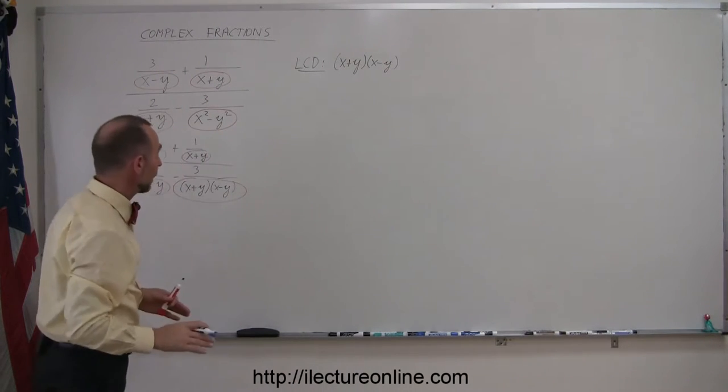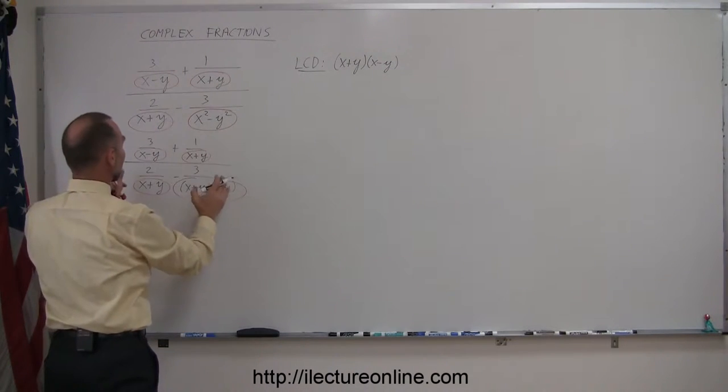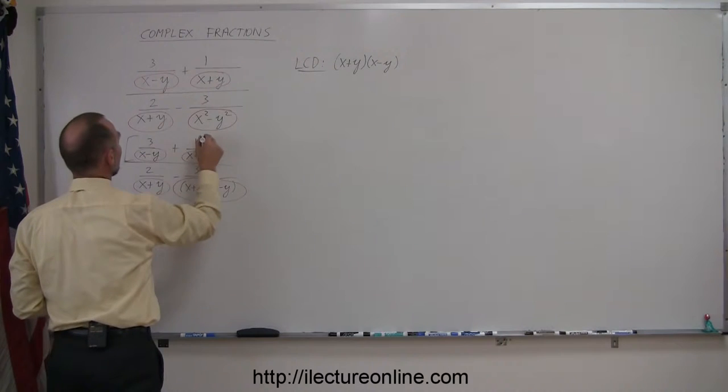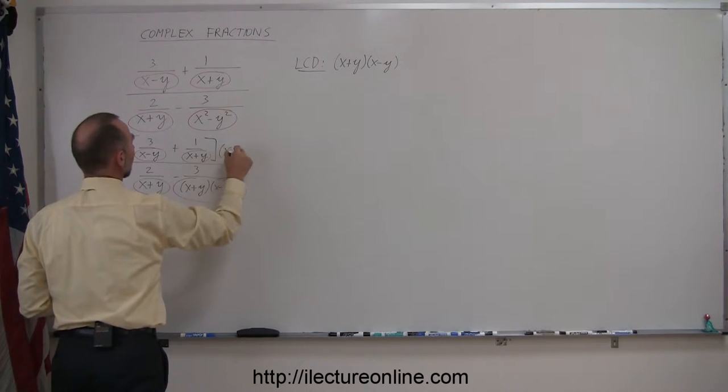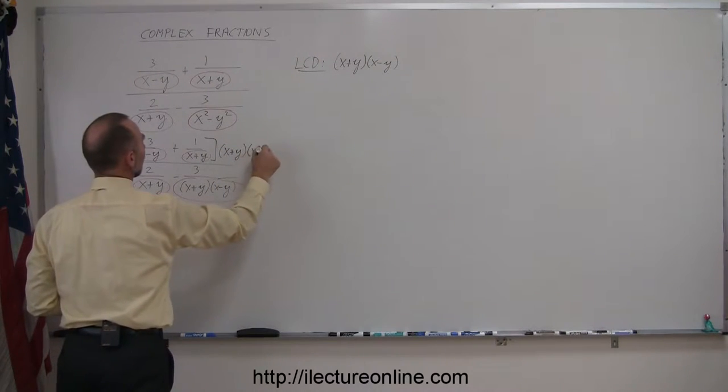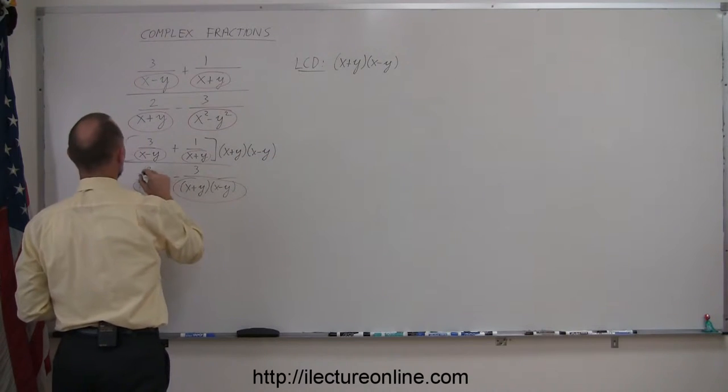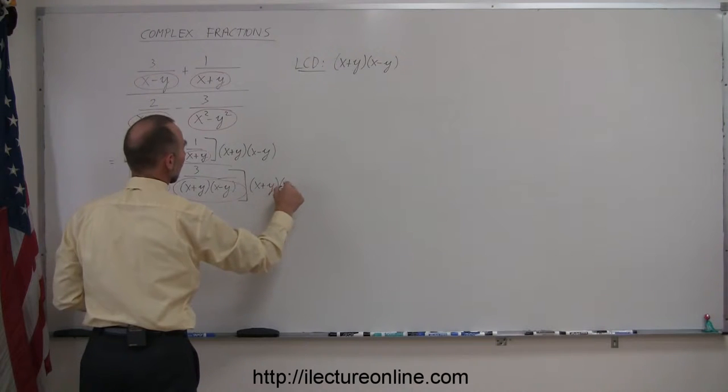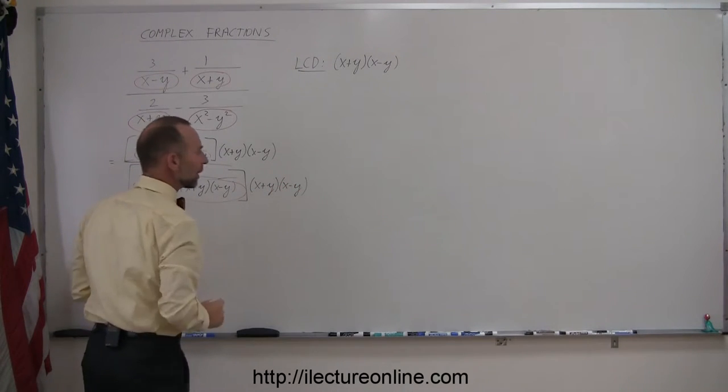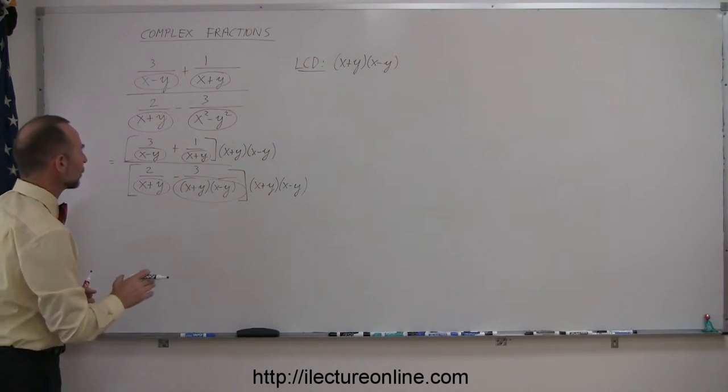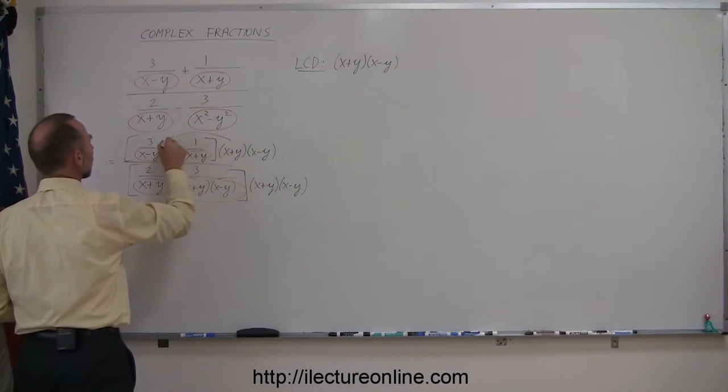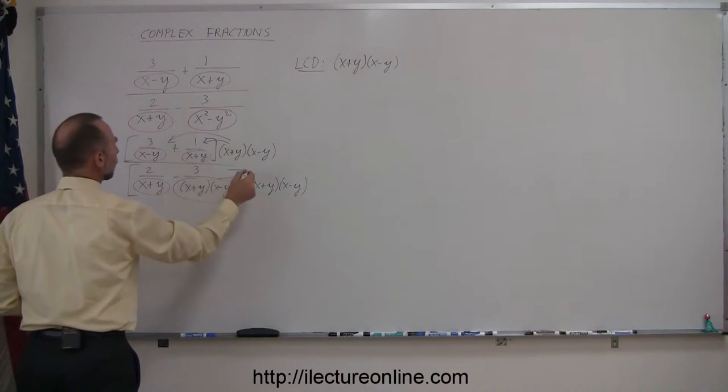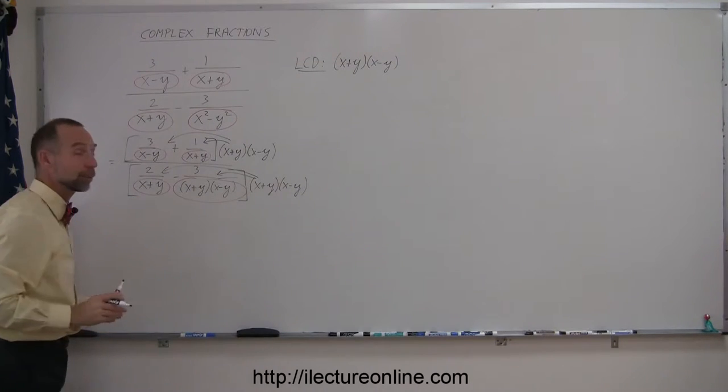Which means I'm going to multiply the numerator and the denominator by the lowest common denominator, so I take the numerator and multiply times x plus y times x minus y, and then I take the denominator and multiply the whole thing by x plus y times x minus y. To make things a little bit easier to see, I'm now going to go ahead and distribute this over the two fractions, the same over here, distribute like that.